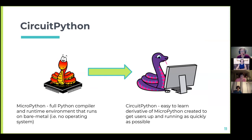CircuitPython originated from MicroPython — a full Python compiler and runtime environment that runs on bare metal, meaning there's no operating system; it literally runs on the metal of the microcontroller. CircuitPython was adapted from that and created to get users up and running as quickly as possible with as little overhead as possible — they take care of a lot of the setup for you.